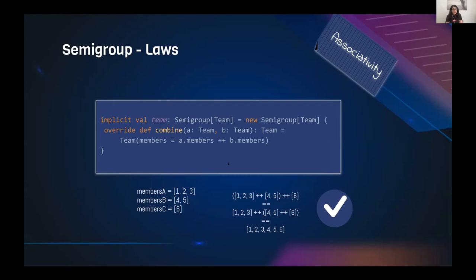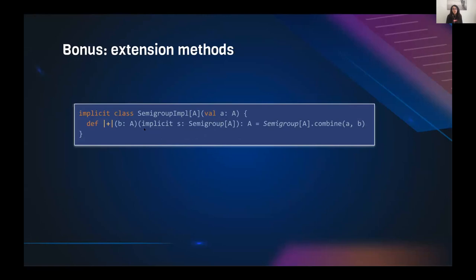If we have our own data type, like 'Team', and we want to add members from other teams, we need to first verify that combining two teams is associative. We take an example with three members and check: yes, it is associative. So Team forms a semi-group, and we implement the type class instance for Team.